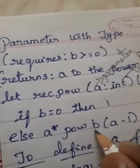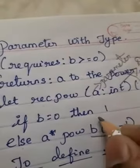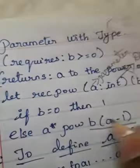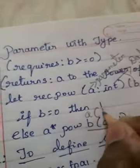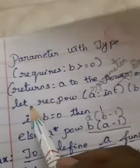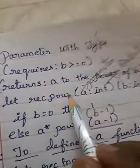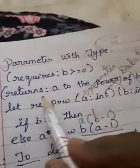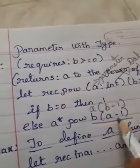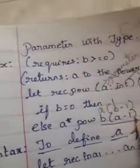Here we have to make a correction — in the book they have written 'b of a minus 1', but we need to change it to 'a of b minus 1', because in the second line what is given is 'a to the power of b'. So in the book also we have to correct this.